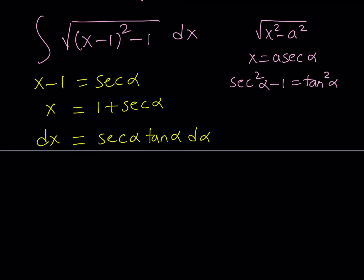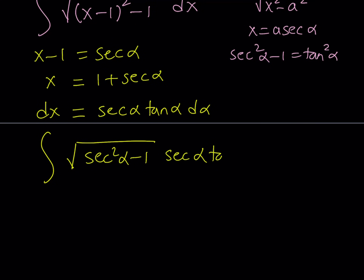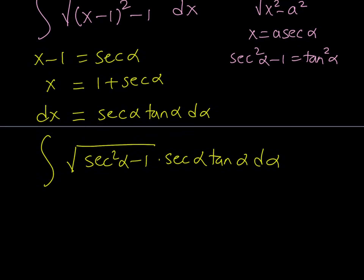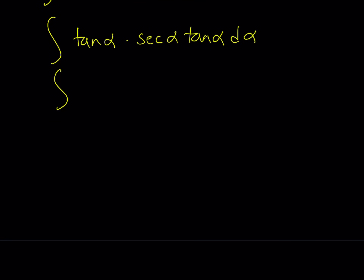Now let's make the replacements. Inside the radical, x minus 1 is replaced with secant alpha, so we get secant squared alpha minus 1. Outside we have dx, which is secant alpha tangent alpha d alpha. Let's simplify inside the radical: secant squared alpha minus 1 equals tangent squared alpha, so we write it as tangent alpha — assuming it's positive on the relevant interval. This gives us a trigonometric integral: the integral of secant alpha multiplied by tangent squared alpha d alpha.